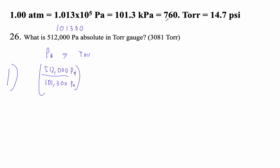So that's how many atmospheres. Then, an atmosphere in Torr is 760. So 512,000 divided by 101,300 - that's roughly 5 atmospheres - times 760.